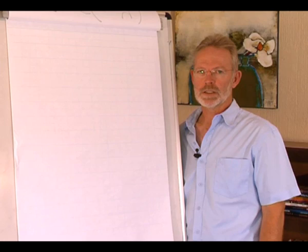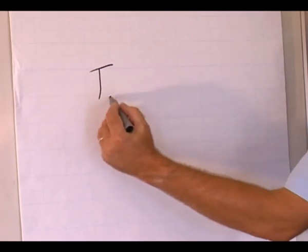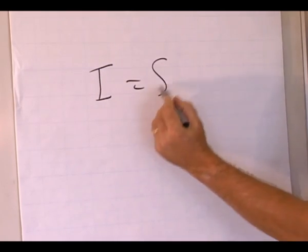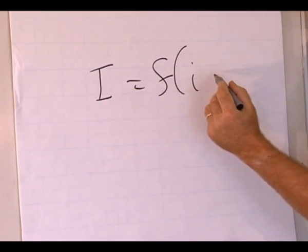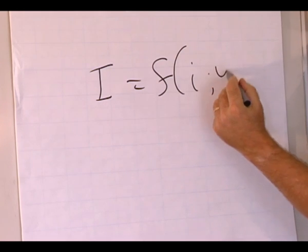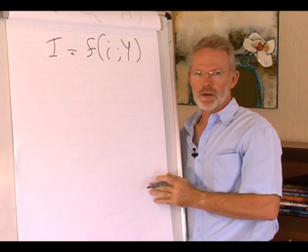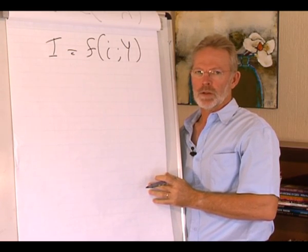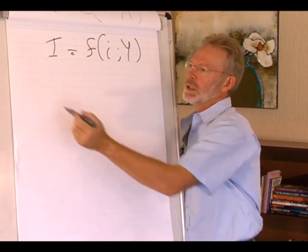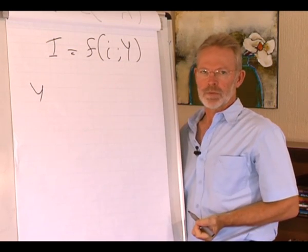The investment relation shows that investment is a function of the interest rate and the level of output. We're first going to concentrate on the relationship between output and the level of investment.